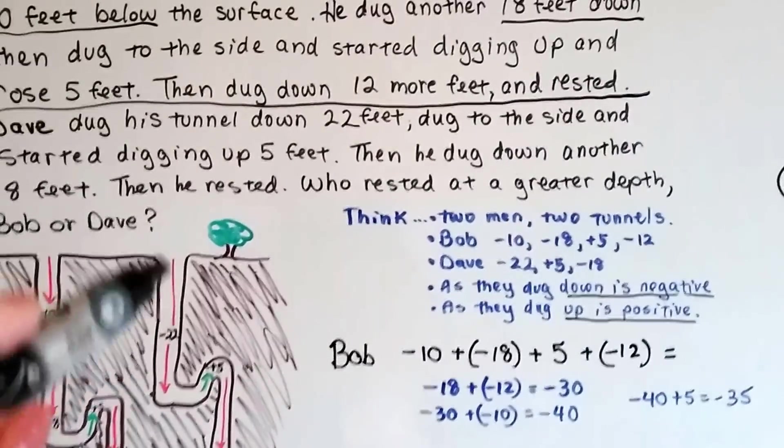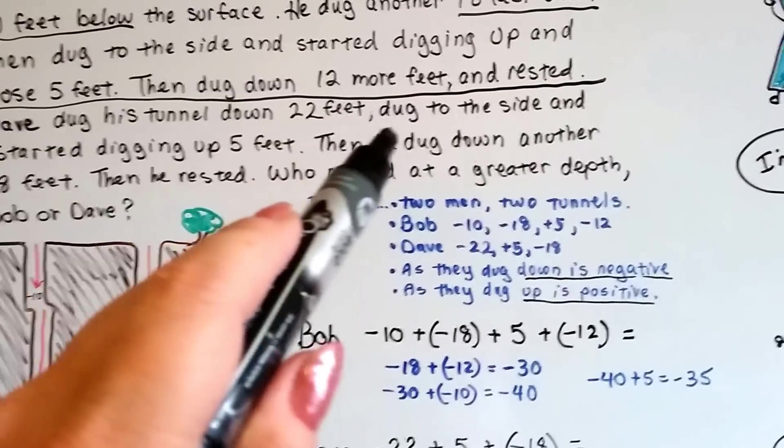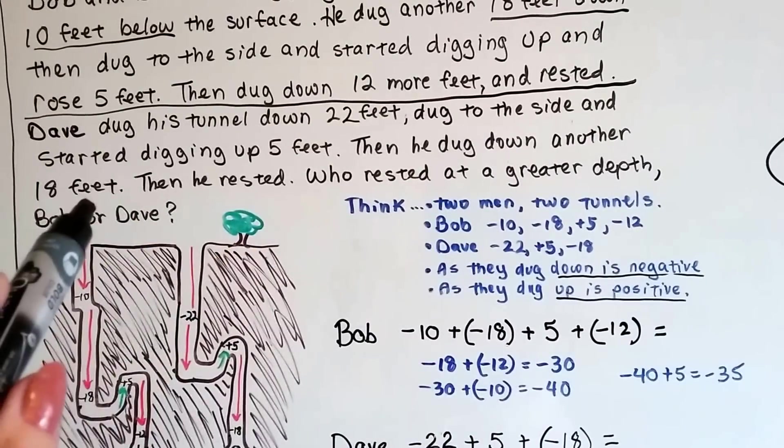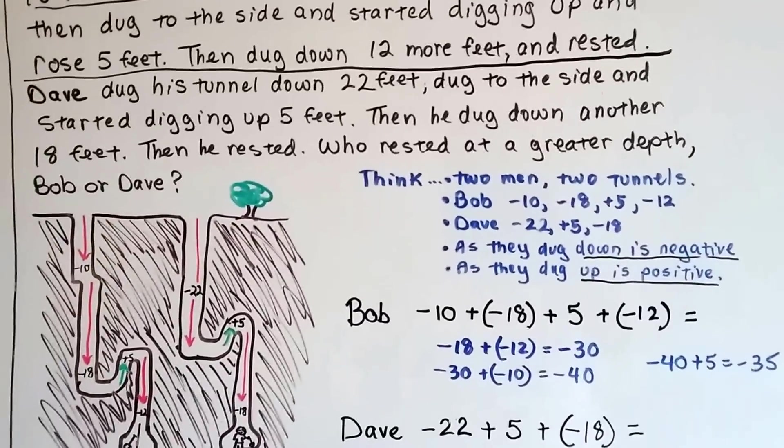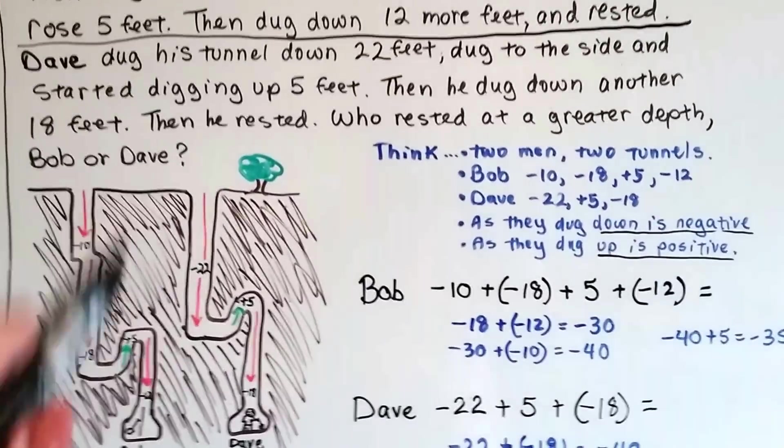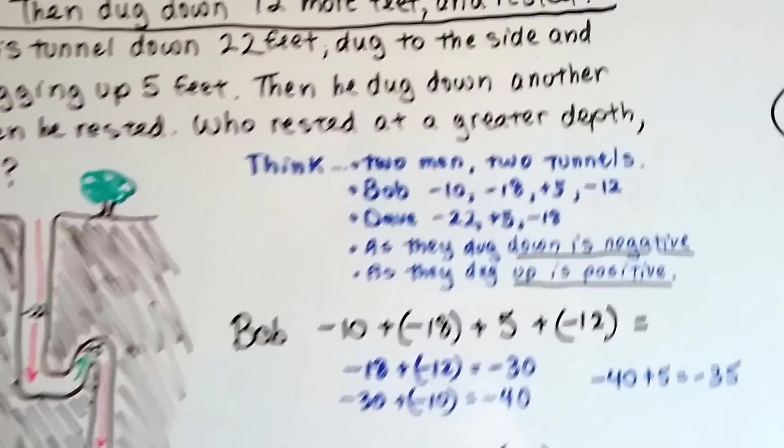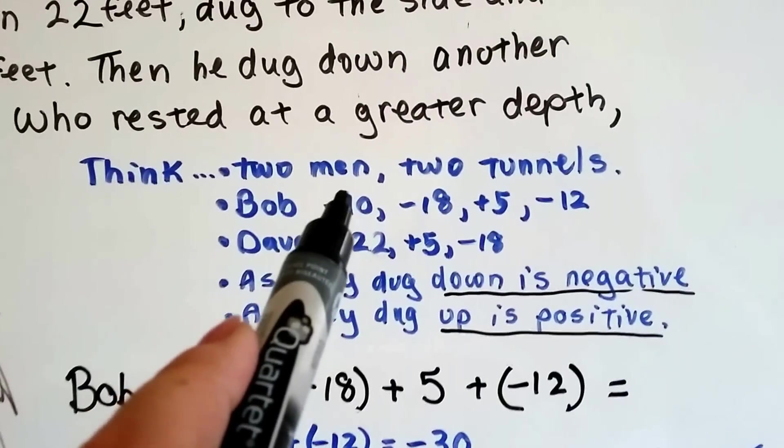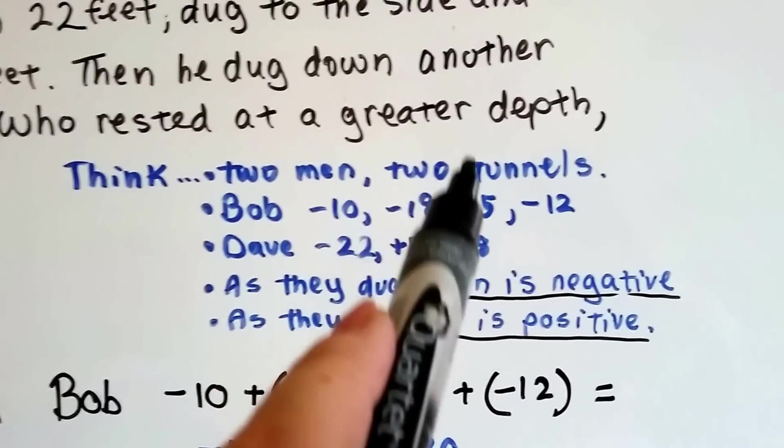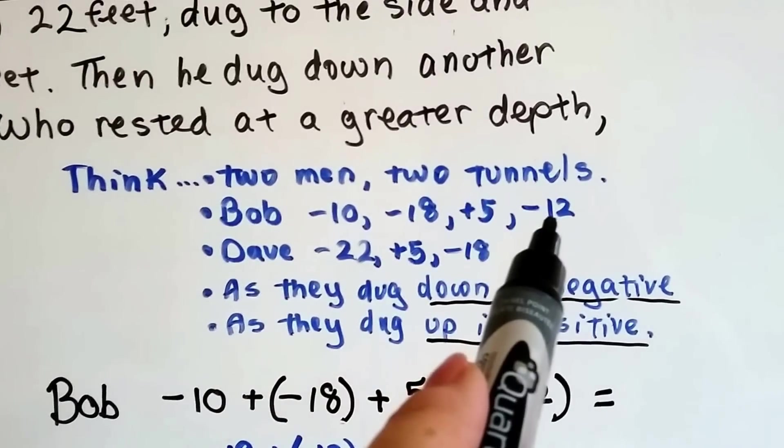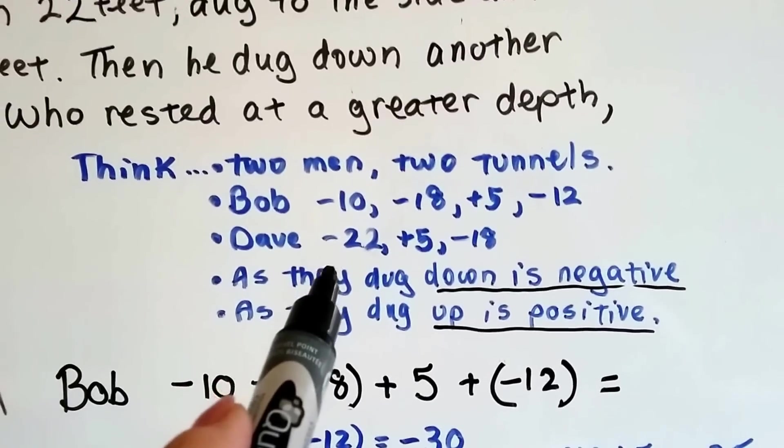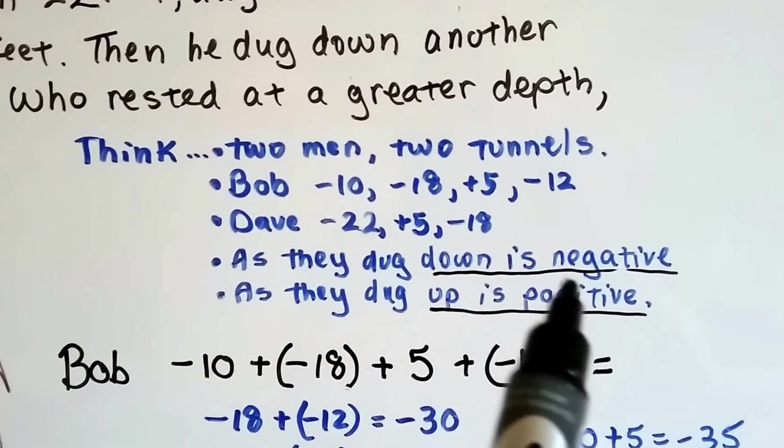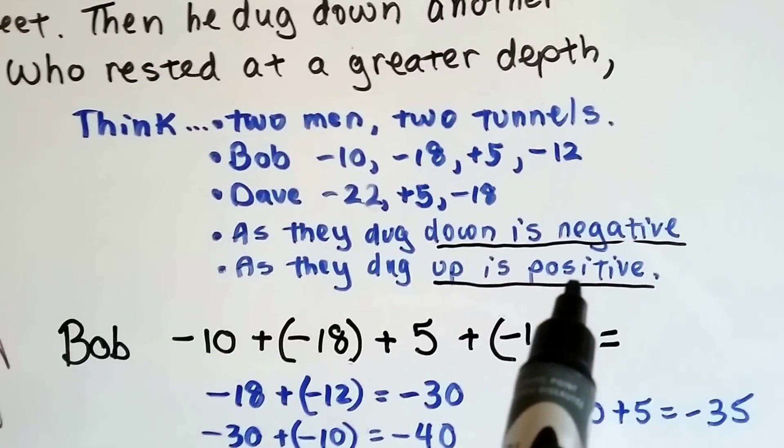Now we have Dave. Here's Dave's tunnel. He dug down 22 feet, dug to the side, and started digging up 5. Then he dug down another 18 feet. Then he rested. They want to know who rested at a greater depth, Bob or Dave. What we need to do is add all their digging. We think. There's two men. There's two tunnels. Bob was minus 10, then minus another 18. Then he went up 5, and then he went down another 12. Dave went down 22, went up 5, and went down 18. As they dug down, it's negative. And as they dug up, it's positive.